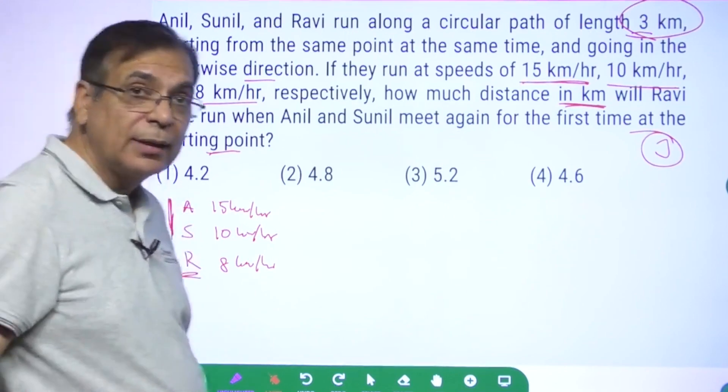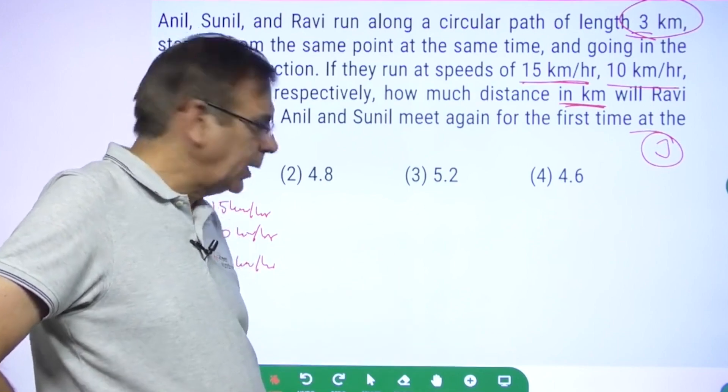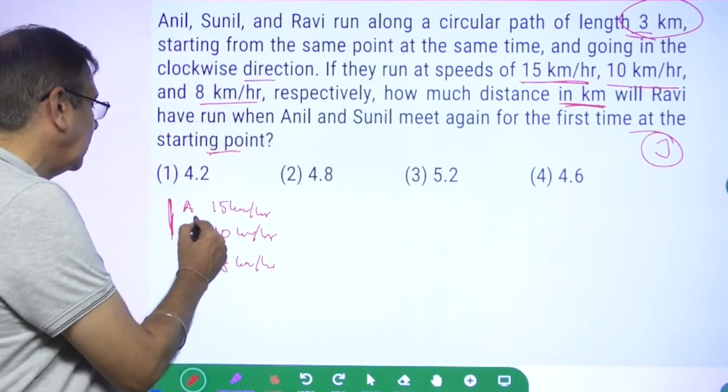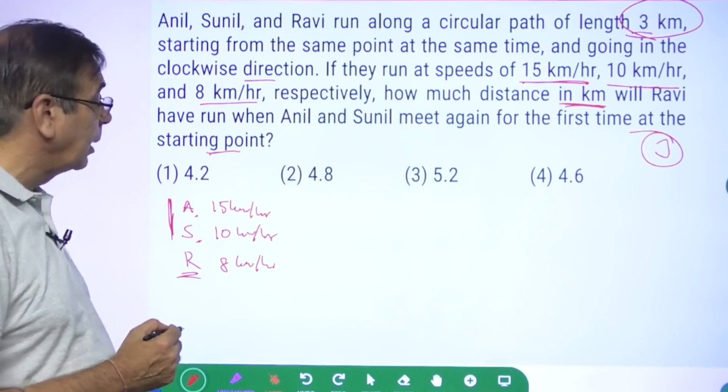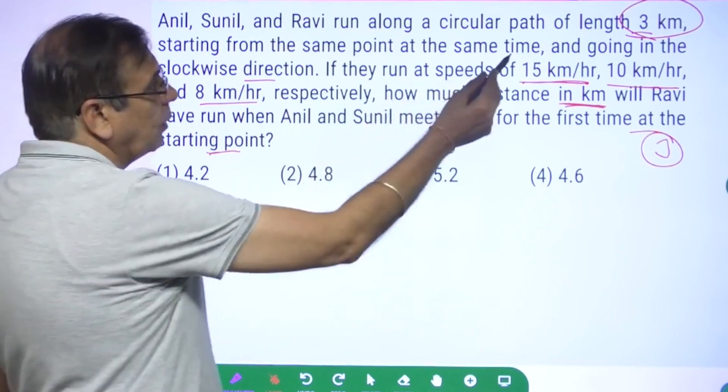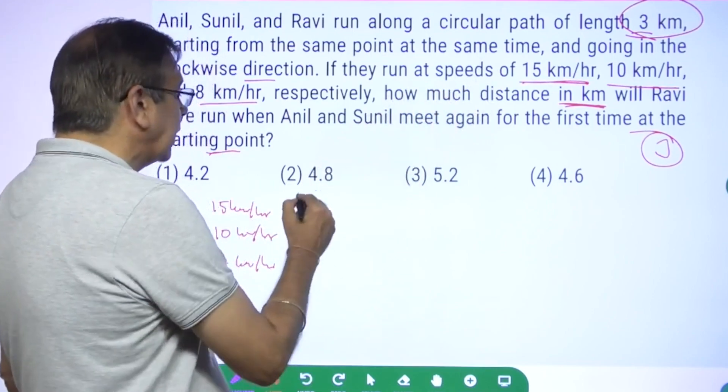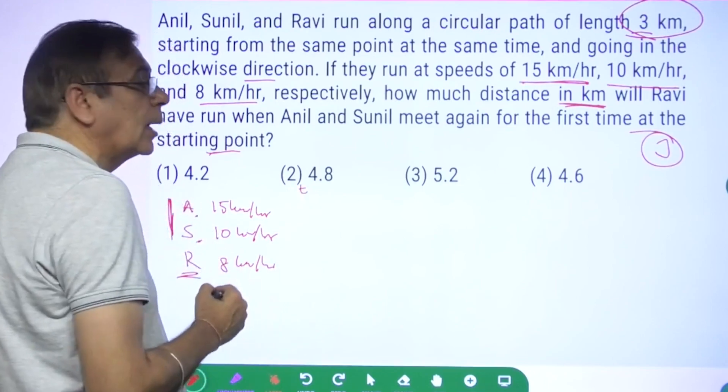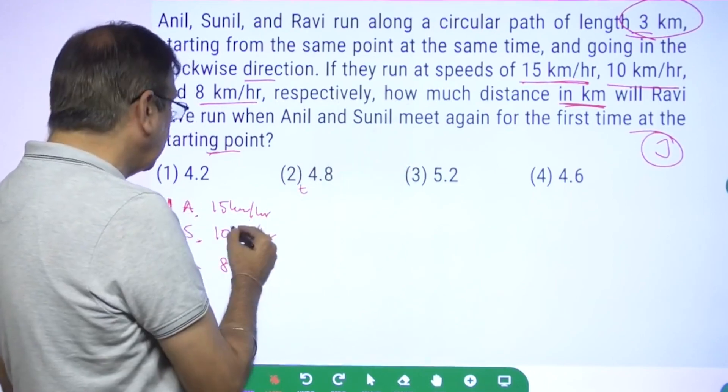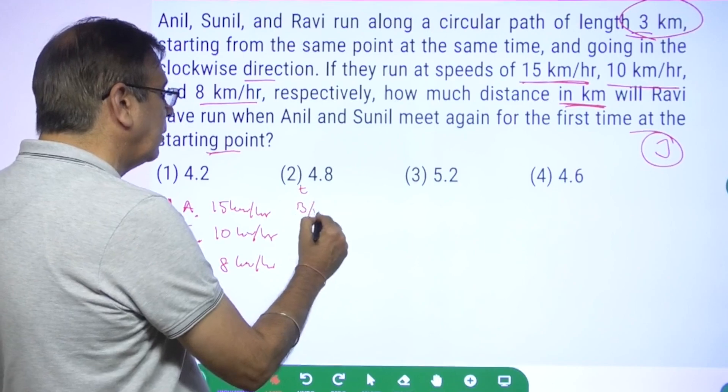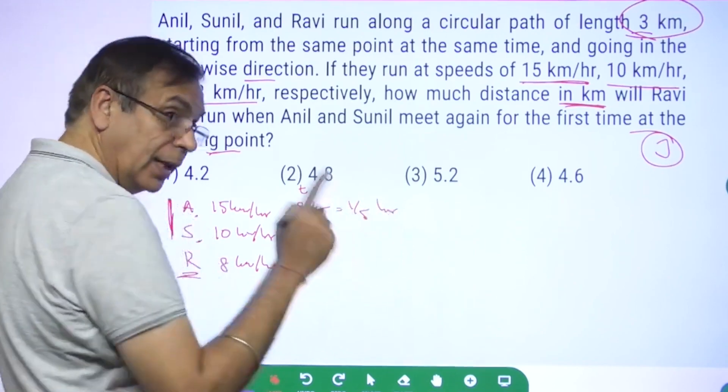So one round is 3 kilometers. Time taken for Anil to complete one round at 15 km/hr is 3/15 = 1/5 of an hour. Again, I'm working only in hours because the question is in kilometers, speeds are given in km/hr, and the answer must be found in kilometers.